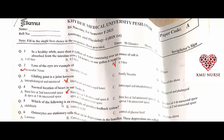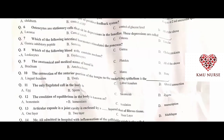Which of the following is an example of a positive feedback system? Childbirth. A is the correct option. Osteocytes are stationary cells that sit in a depression in the lamina. These depressions are called lacunae. A is the correct option.